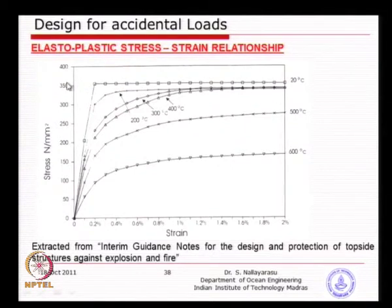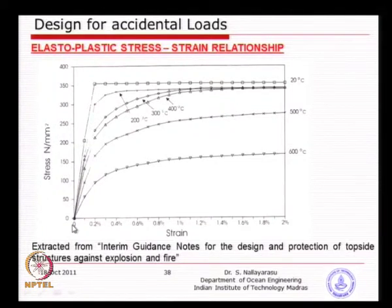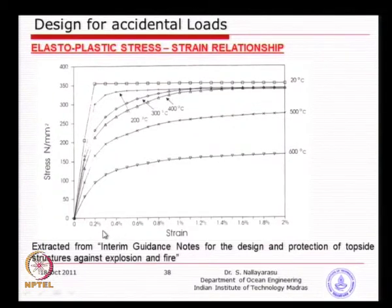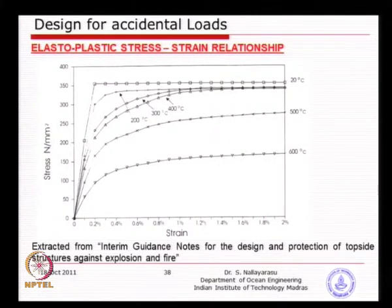When designing at say 500 degrees, you need to consider not only yield strength but also the initial modulus or tangent modulus depending on the strain level. At 0.2 percent strain at 500 degrees, the yield strength is around 160–170 MPa. But if you allow 1 percent strain, you can utilize up to about 240 MPa. It all depends on what strain you are allowing, which corresponds to the deformation you permit.